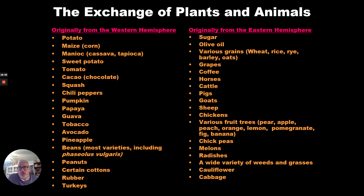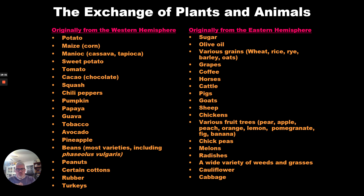And Europe is going to give America sugar, olive oil, various grains like wheat, rice, rye, barley, and oats, grapes, coffee — imagine life without coffee — and fruits like pears, apples, peaches, oranges, lemons, pomegranate, figs, bananas, chickpeas, melons, radishes, weeds and grasses, cauliflower, and cabbage. All of these are going to be part of the Columbian Exchange.